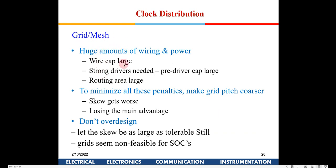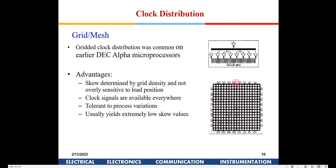Disadvantages of the grid include huge amounts of wiring and power, and large capacitance — unlike the H-tree which has lower total capacitance. Strong drivers are also needed. Skew gets worse with a coarser pitch, so you have to size the grid based on your application. It can also create routing congestion. For example, in a 45nm process with 13 metal layers, you might earmark one horizontal and one vertical layer for the clock grid.